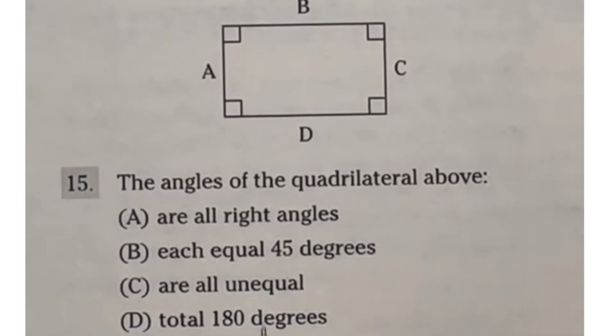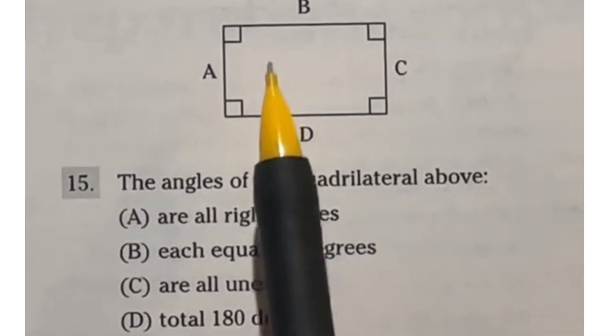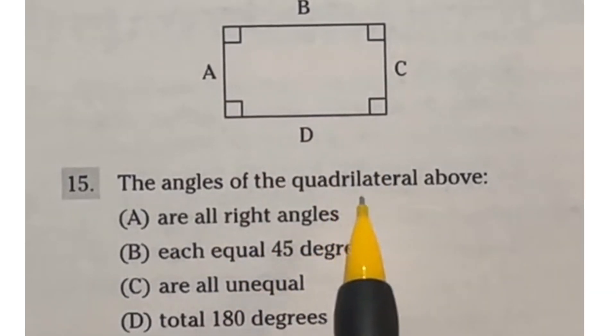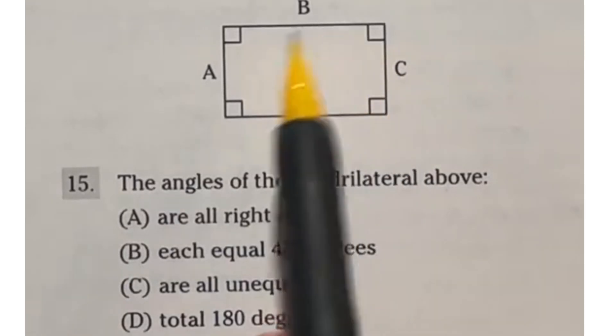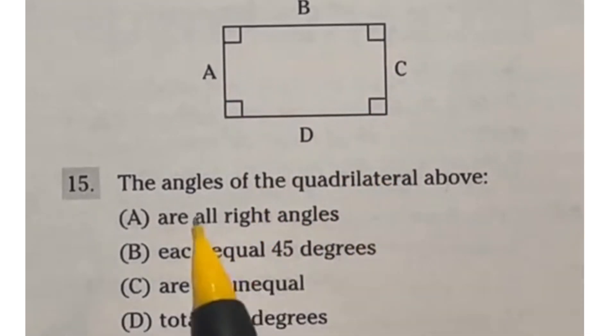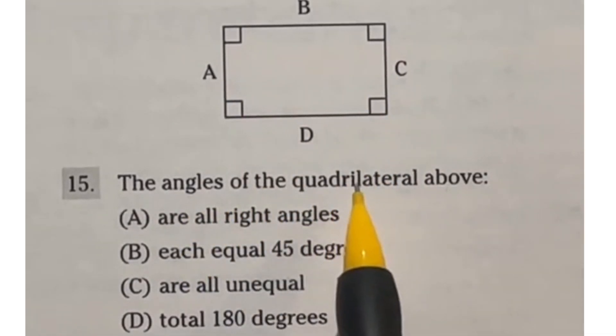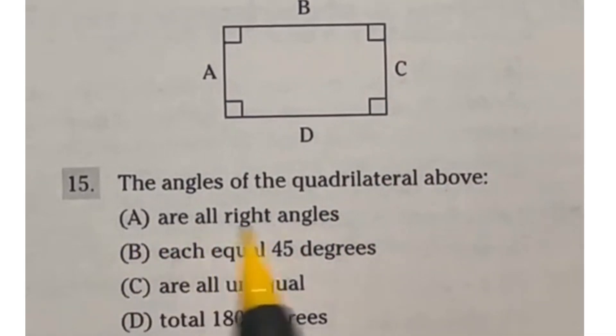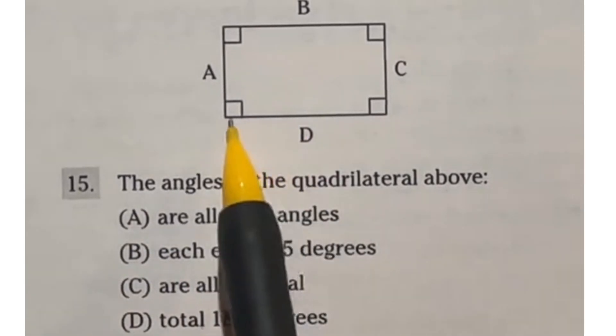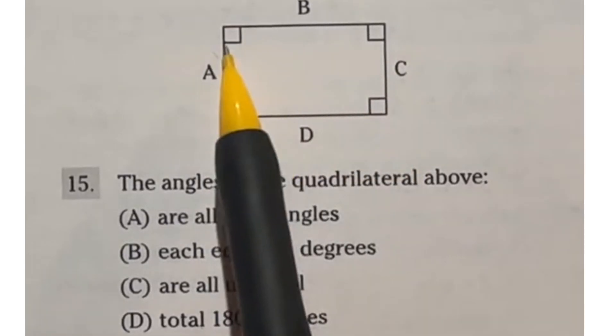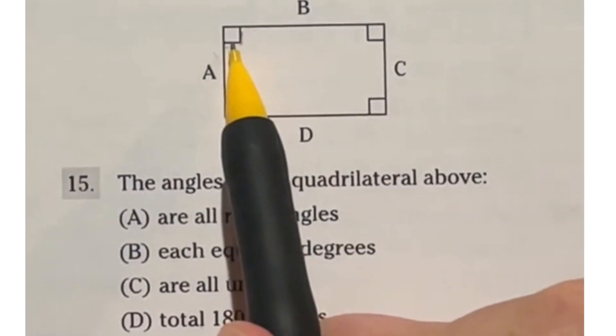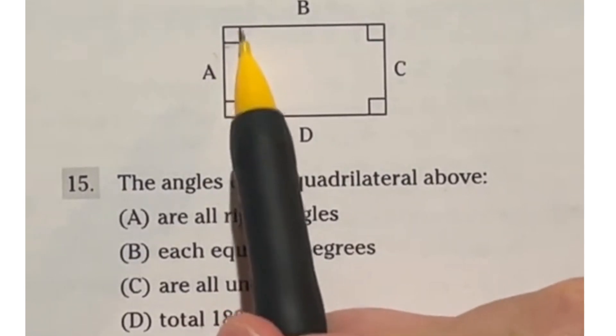So for number 15, let's go ahead and discuss some of the things that are up here. So we're looking at a quadrilateral, which just means it has four sides, which this rectangle does. It says the angles of a quadrilateral above are A, all right angles, B, each equal to 45 degrees, C, are all unequal, or D, a total of 180 degrees. Well, when you're dealing with a rectangle or a square for that matter, they always have right angles at each of these corners, which is what this little square shape means right here. That means it's 90 degrees.